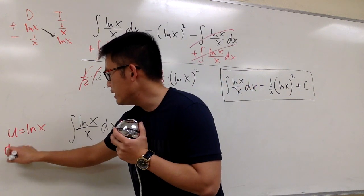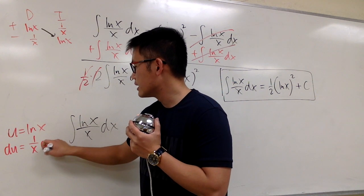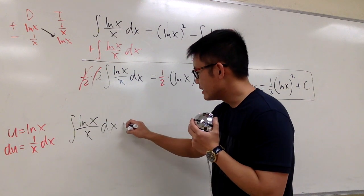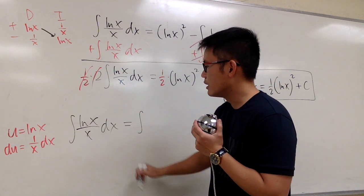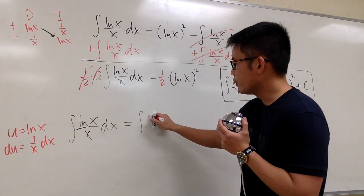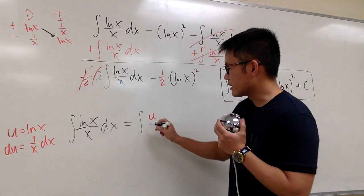And now we'll do du. The derivative of ln x is 1 over x dx. As you can see, this is the same as integral. The ln x is the same as u. So we'll have u on the top. And let me show you the cancellation.